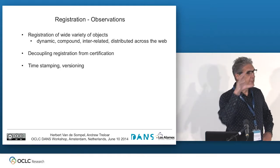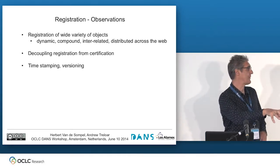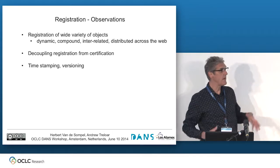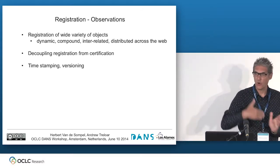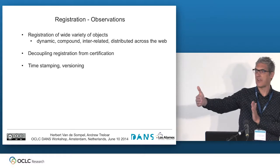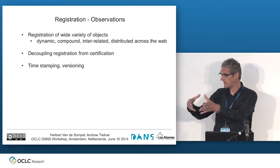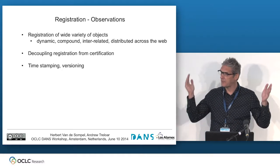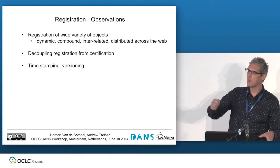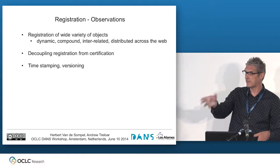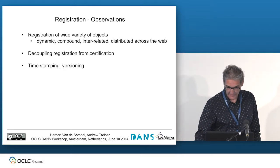Summary observations for registration: there's a wide variety of objects — dynamic, versioned, compound, interrelated, all over the web. The notion of registering things without certifying them is new. When we registered a paper, it immediately got certified and only saw the light of day as a jointly registered and certified thing — the journal paper. Now we see registration of an awful lot of things without anyone certifying them. Timestamping and versioning are increasingly important.